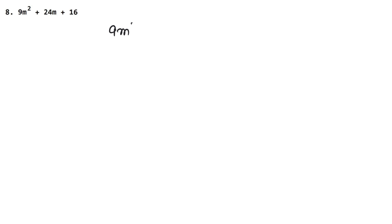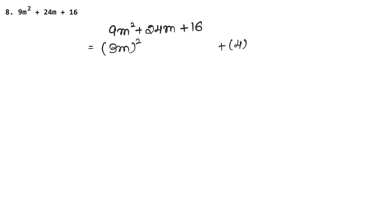In this question we have to factorize 9m² + 24m + 16. Now if you see 9m², it is a perfect square: 3 squared and m squared, so we can write it as (3m) whole square. Now 16, we know the square root is 4, so that's (4) whole square. Since 24 is not a perfect square, we leave 24 as it is.